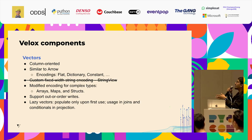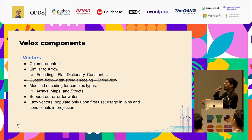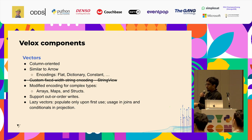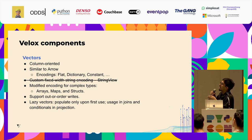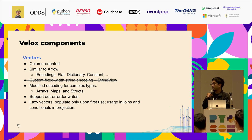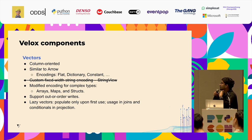The fundamental unit of Velox is vectors — a column-oriented memory format similar to Arrow but with its own differences. It supports encodings like flat, dictionary, and constant. Previously Arrow didn't have support for string view with a custom fixed-width string encoding, but Arrow recently added that support. As a company, we're also working on making Velox and Arrow much more aligned so as to use Velox for computing on Arrow arrays. Velox also supports modified encoding for complex types like arrays, maps, and structs, and supports out-of-order writes so it can still run even if data is not in proper order. It also supports lazy vectors, which is very beneficial for joins or conditionals in projection, populating data only when actually called.